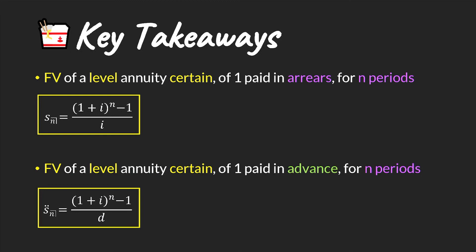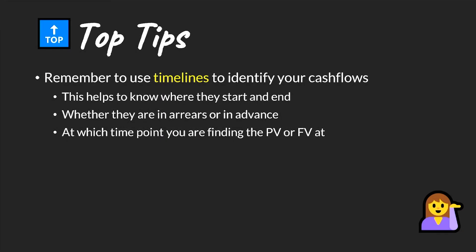We also have the future value of a level annuity either in arrears or in advance, and again the only difference between these two formulas is the denominator — one uses i and the other uses d. Top tip: always use a timeline to identify your cash flows. It helps you determine whether cash flows are paid in advance or in arrears, and it clarifies the reference time point for the present value or future value — sometimes you're asked for a present value at a time point other than zero.